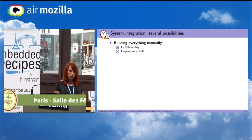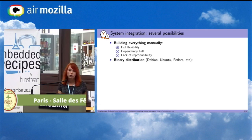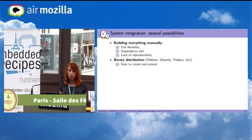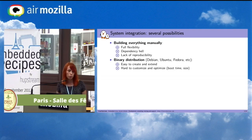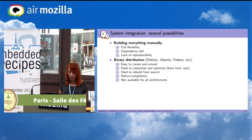But handling dependencies is very difficult, and you have a lack of reproducibility. Another option is to use binary distributions such as Debian or Ubuntu. It's easy to create and extend, but it's hard to customize and optimize, and it's also hard to rebuild from source. You will use native compilation, which is slower than cross-compilation, and it's not available for all architectures.